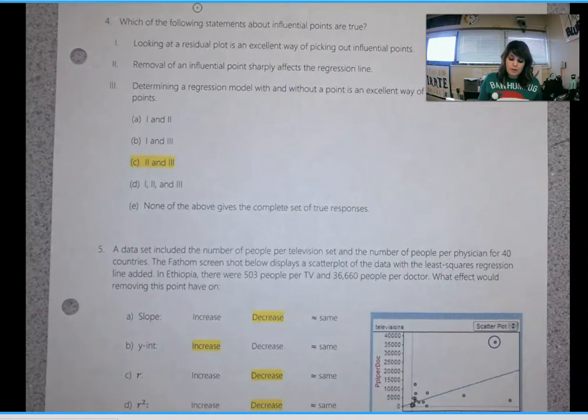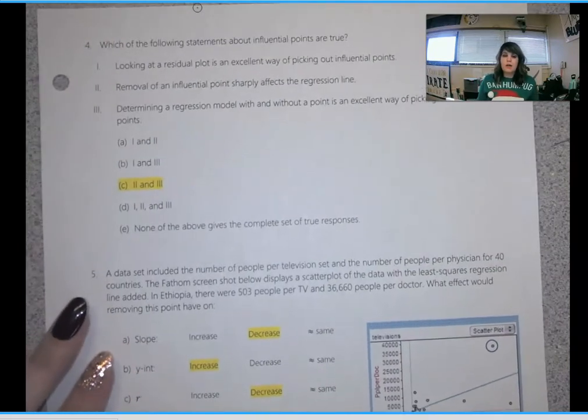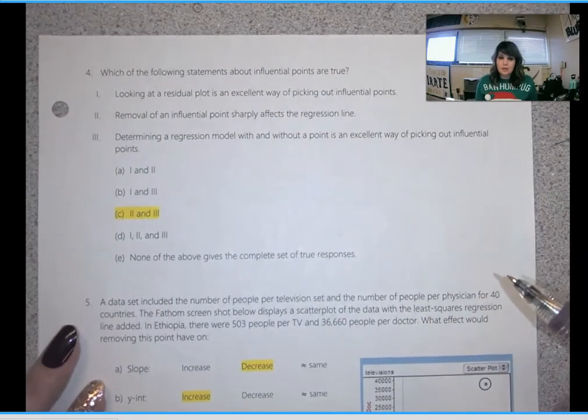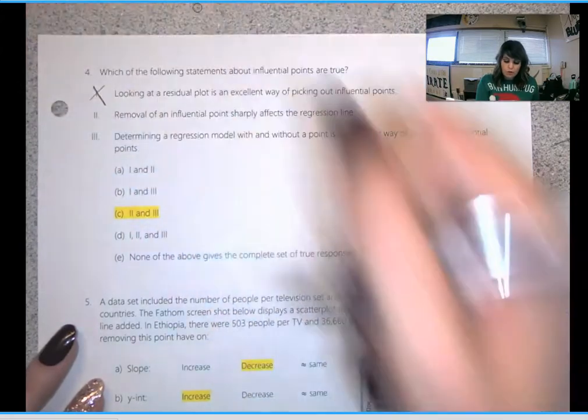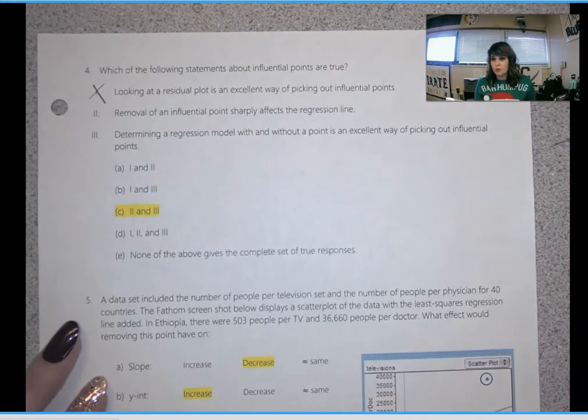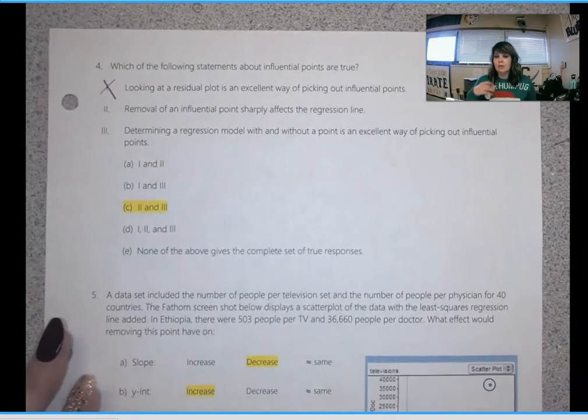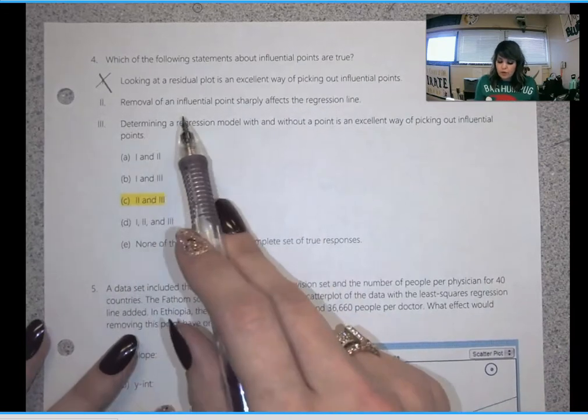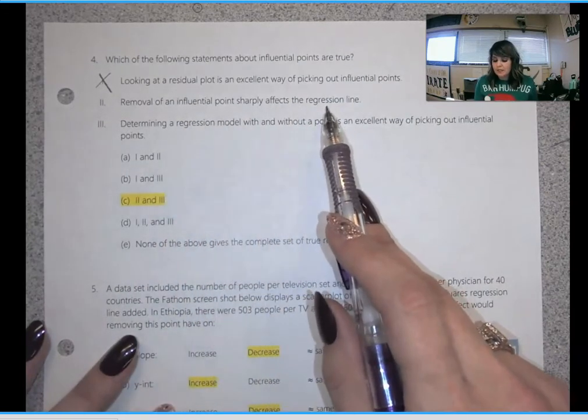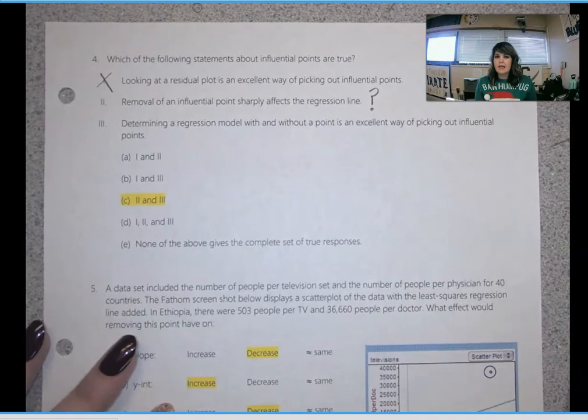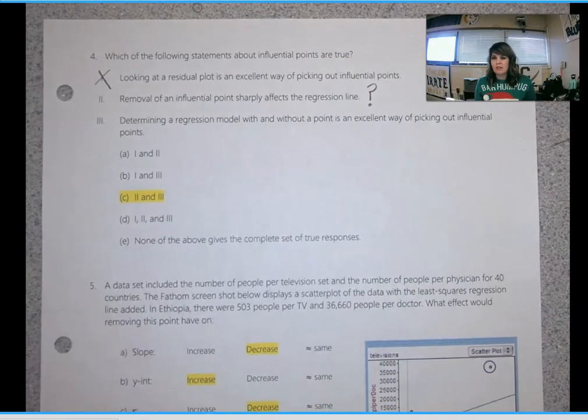Which of the following statements about influential points are true? So I had to use deduction for this one. Looking at a residual plot is an excellent way of picking out influential points. No. We did not discuss that in our lesson. We did not factor in residual plots at all. Well, we did talk about an outlier in terms of its residual, but we never discussed that in terms of the residual plot and what it would look like. Removal of an influential point sharply affects the regression line. Well, I don't know.